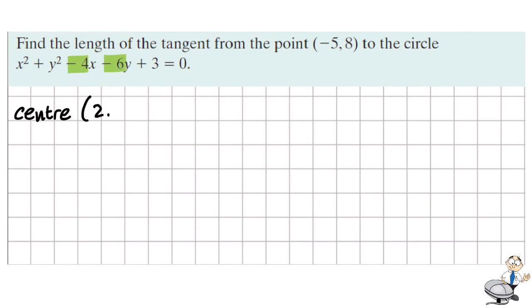We half and change the sign of the x and y coefficients. The radius of this circle is given by the square root of g² + f² - c. Since we're squaring here, we can use the positive values of the center points if we wish.